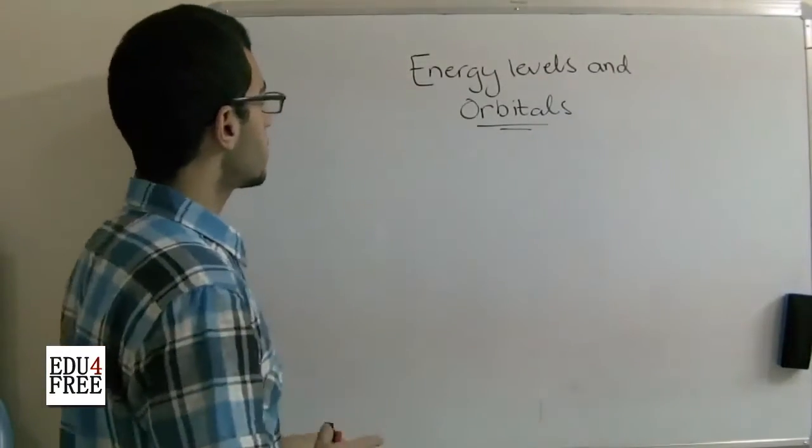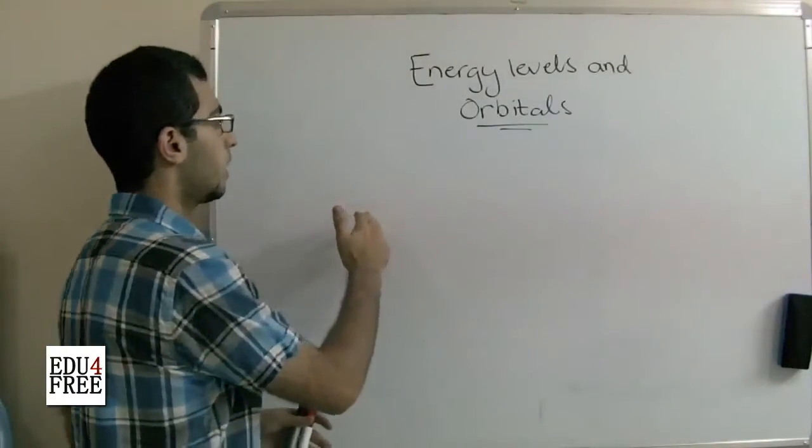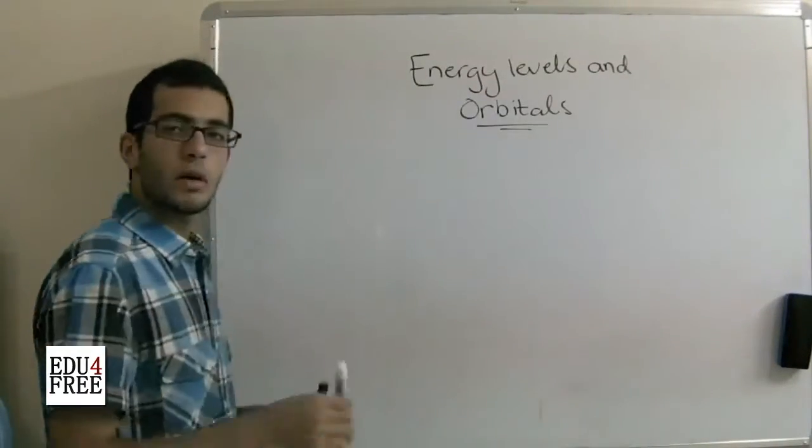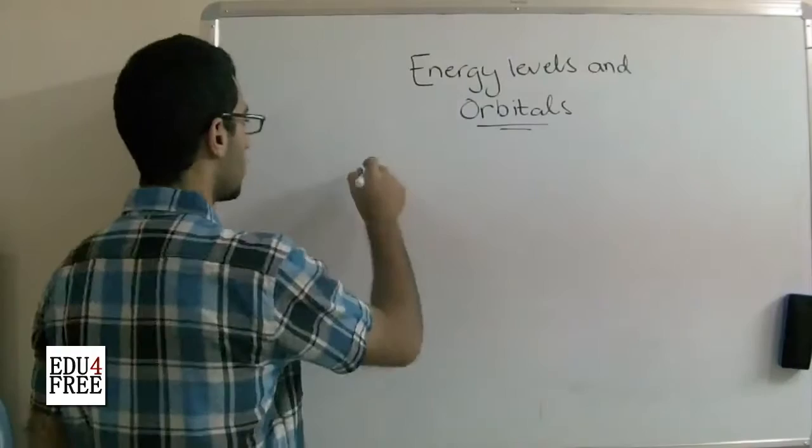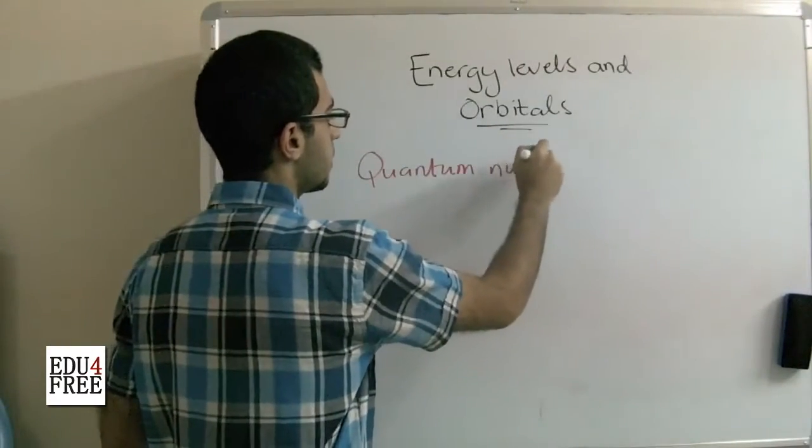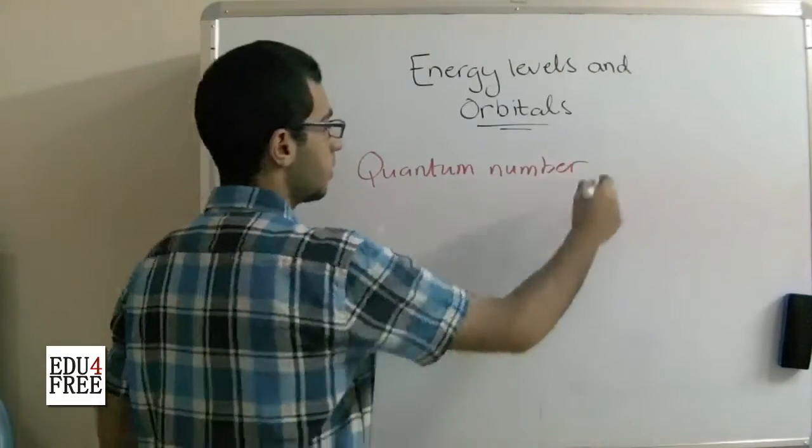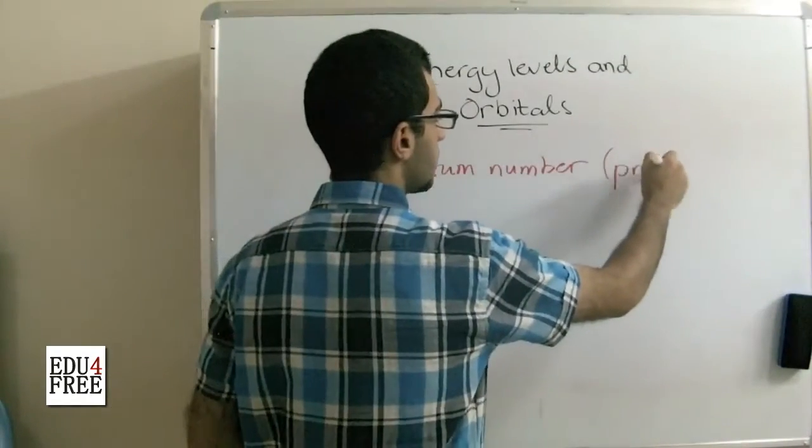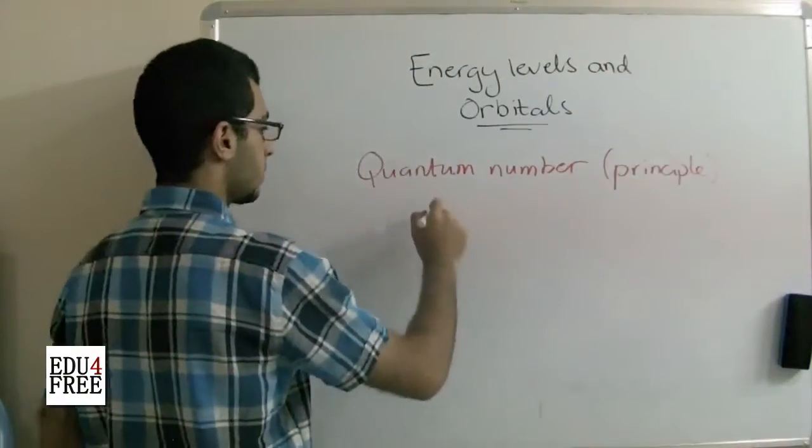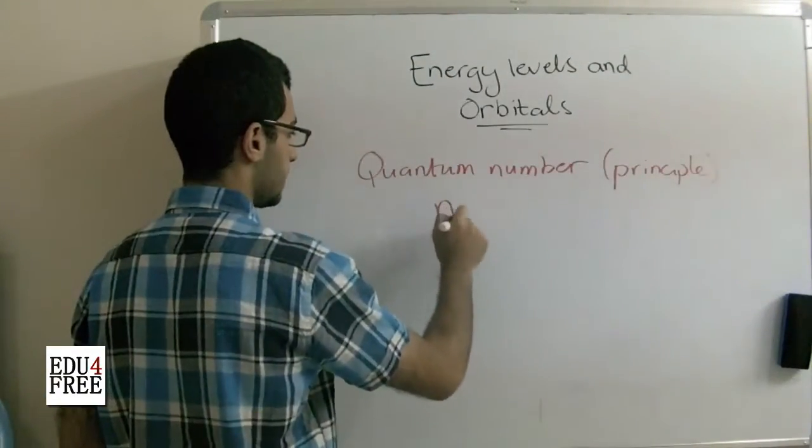So first we will begin with the main energy levels. The main energy levels are expressed by the quantum number which is called the principal quantum number, and this principal quantum number we refer to it as n.